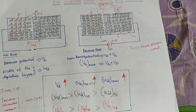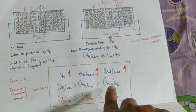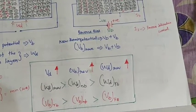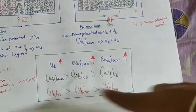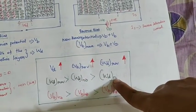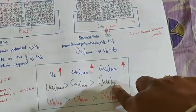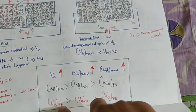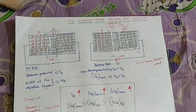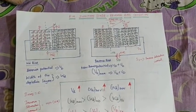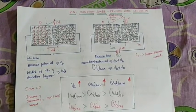This is the reverse bias condition. Current flow is almost zero in reverse bias. There is a comparison of the depletion region width and built-in voltage across no bias, forward bias, and reverse bias conditions. The PN junction diode is a fundamental semiconductor device used in mobile phones, laptops, and all electronics. The transistor is based on the PN junction diode, and it is used in switching and rectifier circuits.